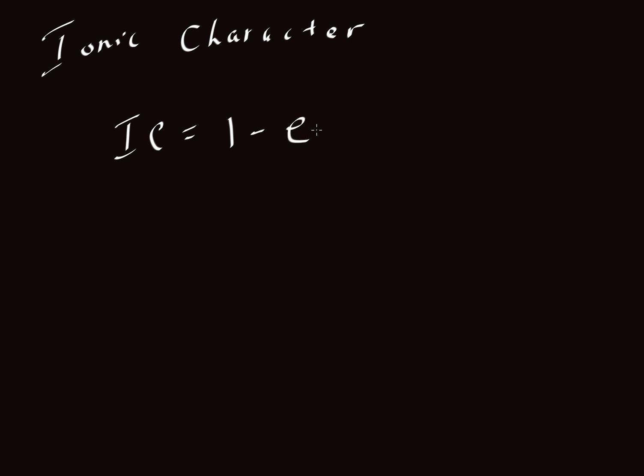So we have 1 minus e raised to the power of negative one-fourth multiplied by (Xₐ minus Xᵦ)². This whole thing—(Xₐ minus Xᵦ) squared—is the exponent above e. And Xₐ and Xᵦ are electronegativities.